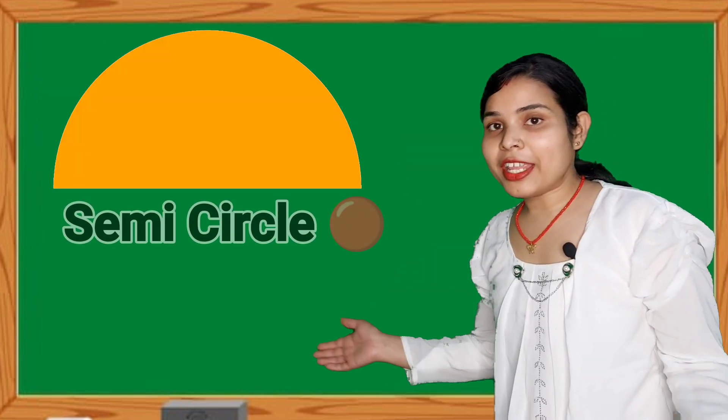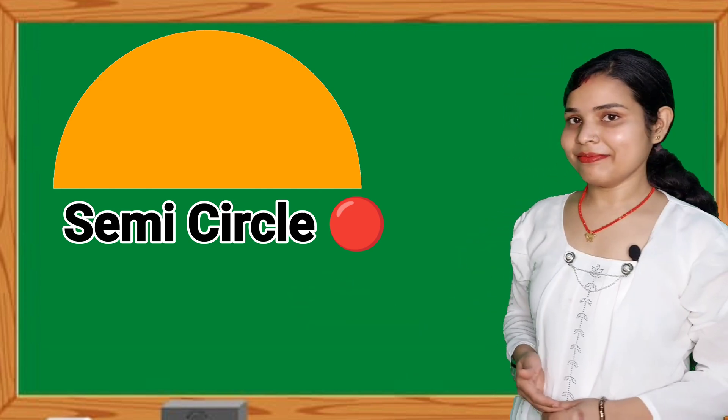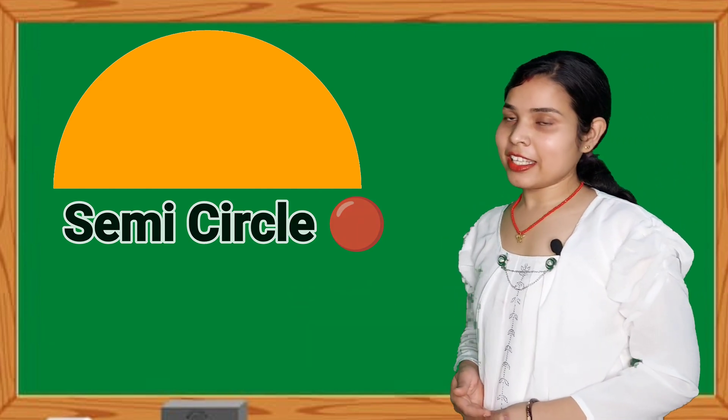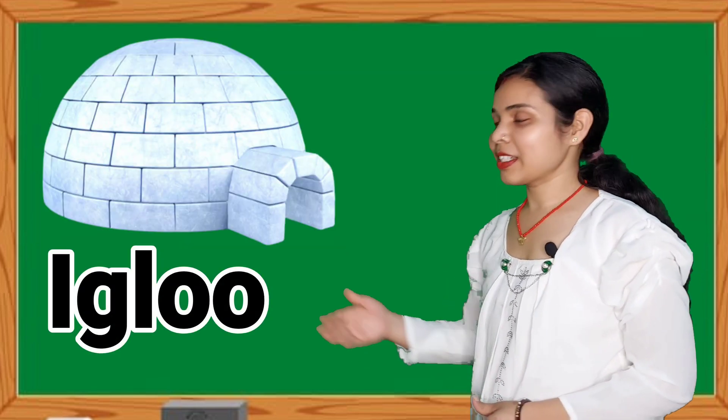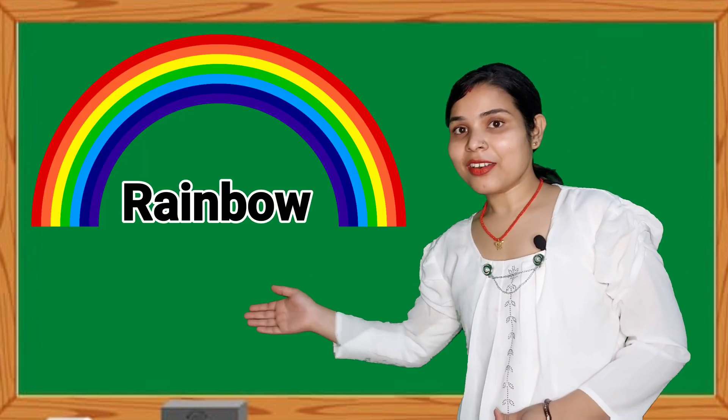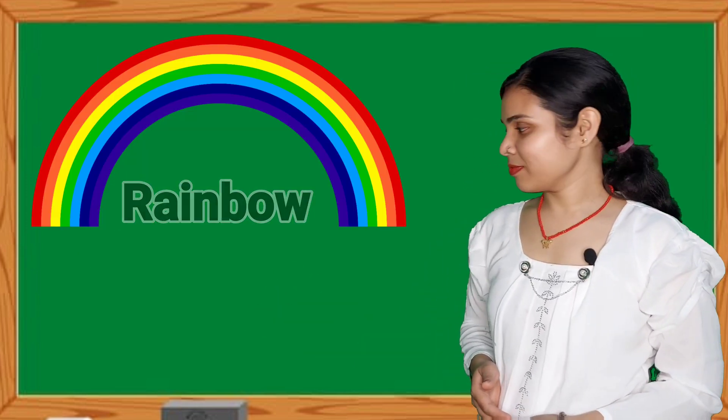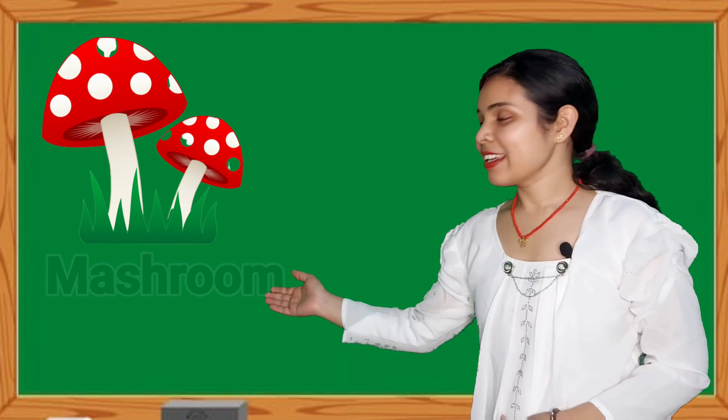Now next shape is semicircle. Children, the shape of semicircle like igloo, rainbow, parachute and umbrella.